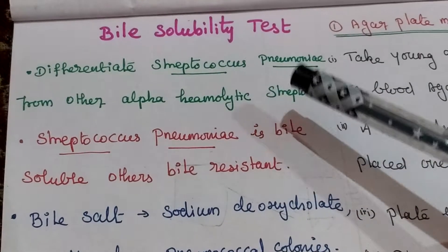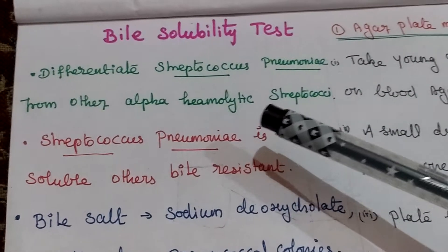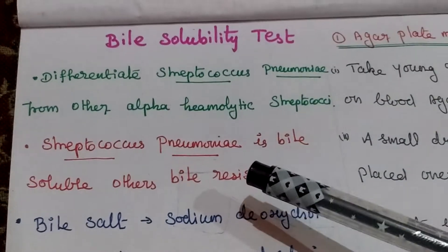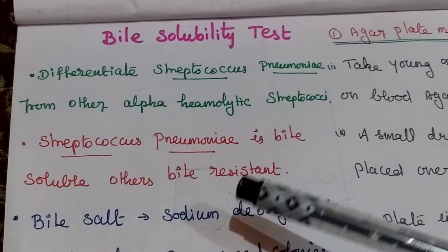It will differentiate Streptococcus pneumoniae from other alpha hemolytic streptococci. The Streptococcus pneumoniae is bile soluble, others bile resistant.